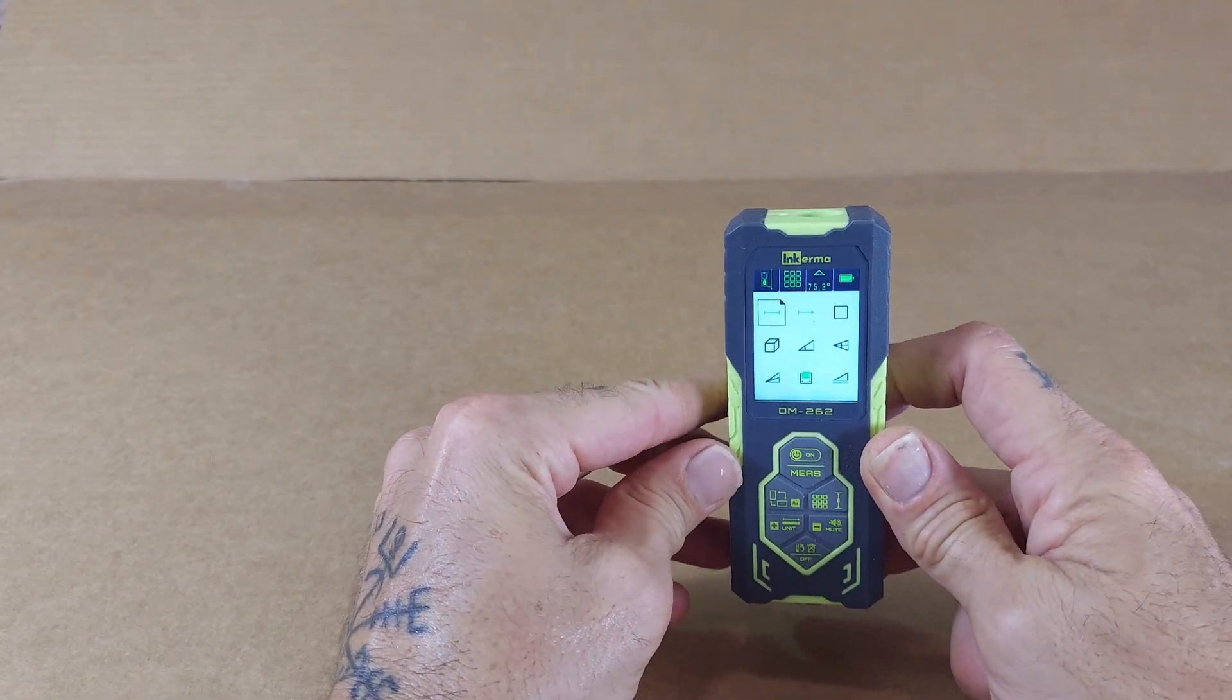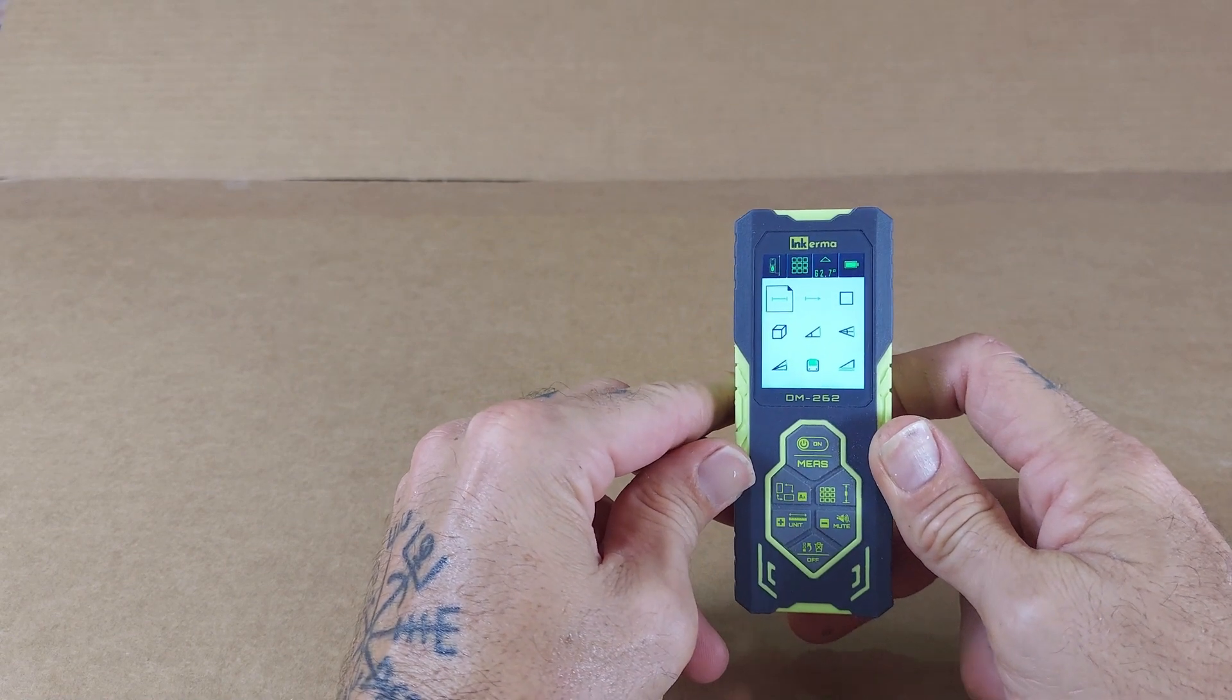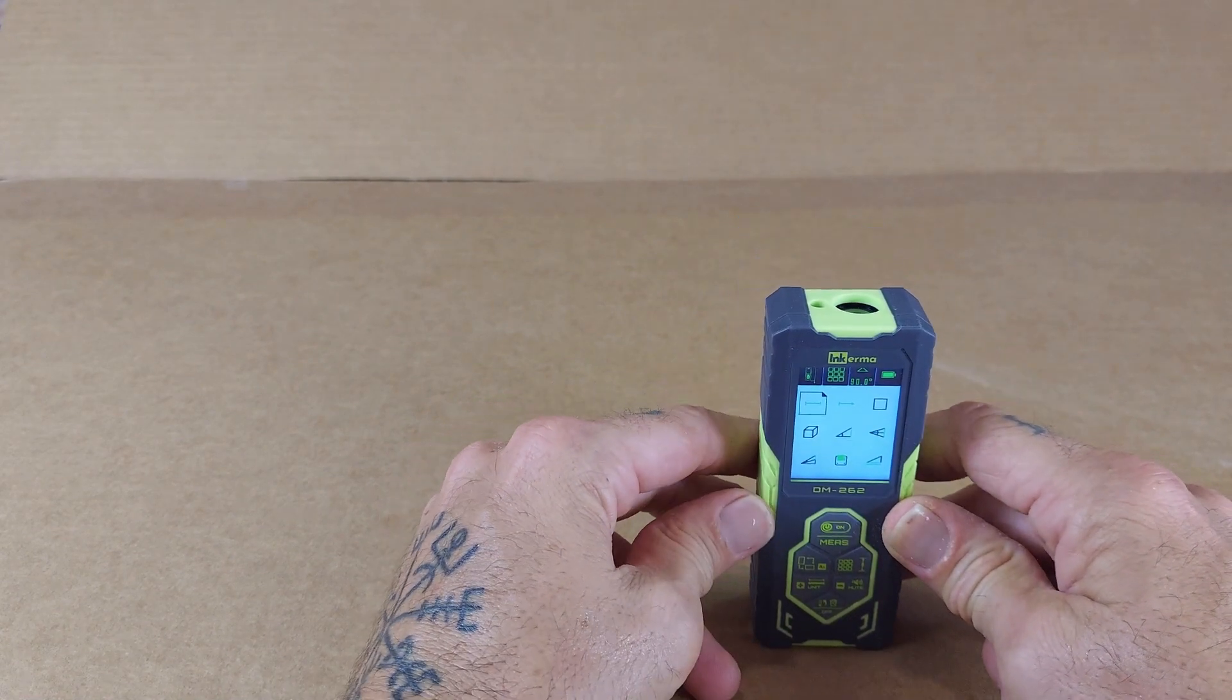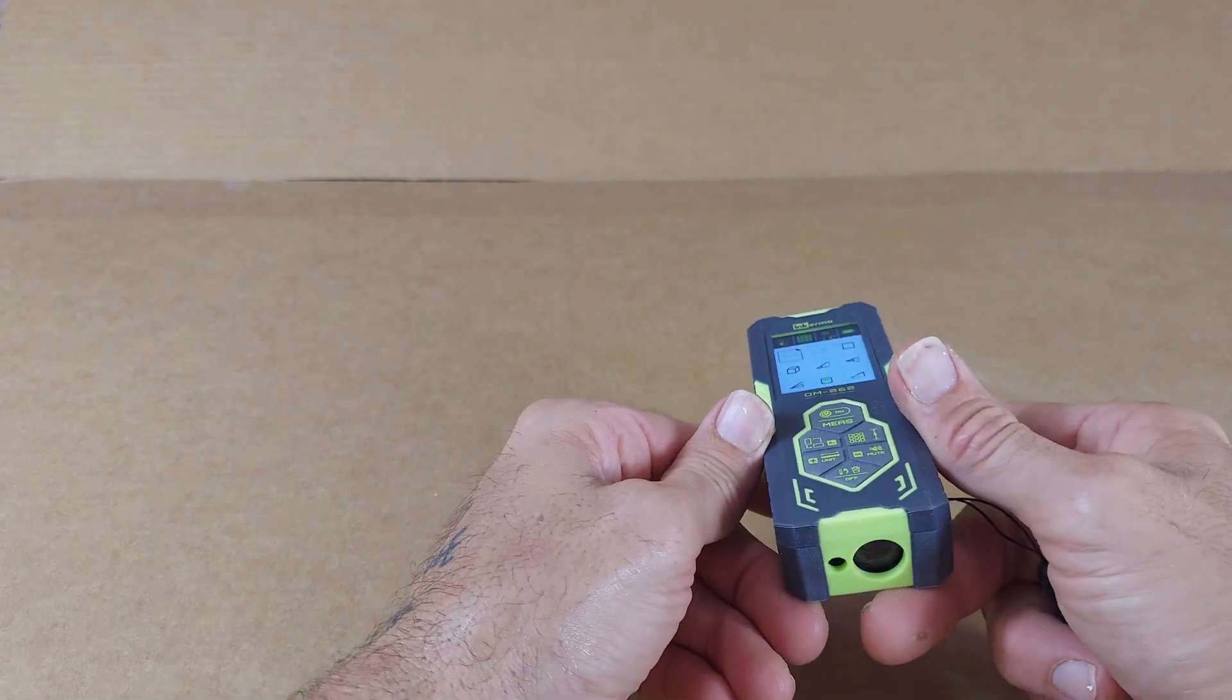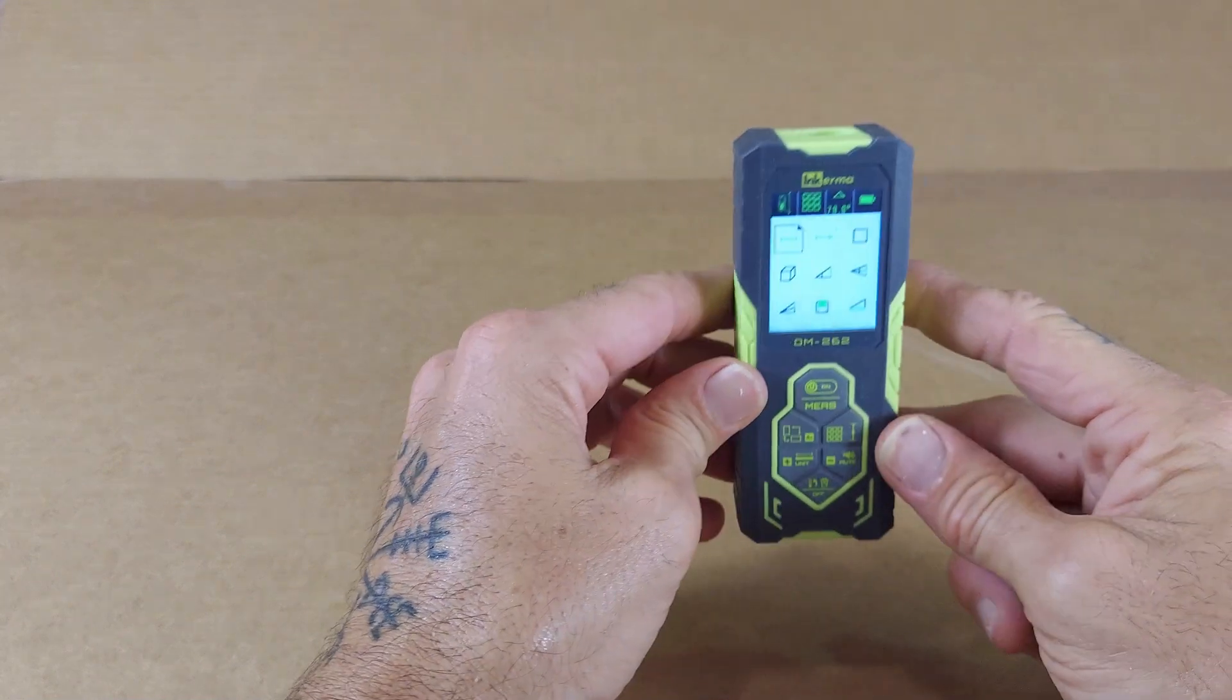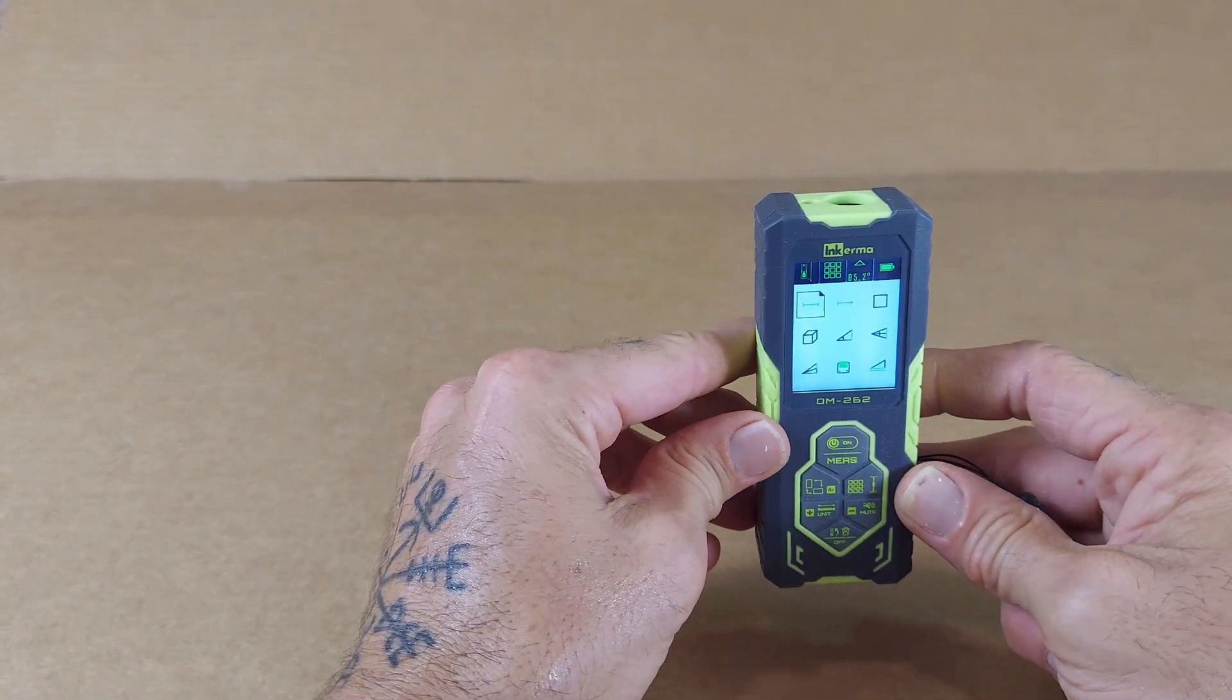So this little measuring tool is different from a lot of others. A lot of them are just single direction measuring. This one is bilateral in that it has lasers on both ends. So you don't have to be sitting on a surface to measure one way.